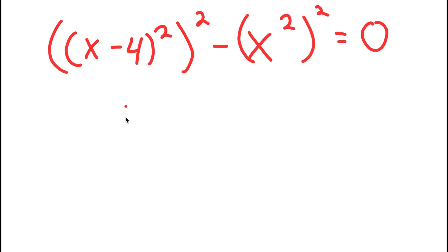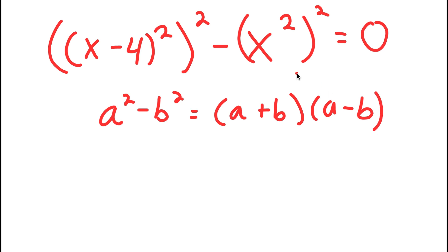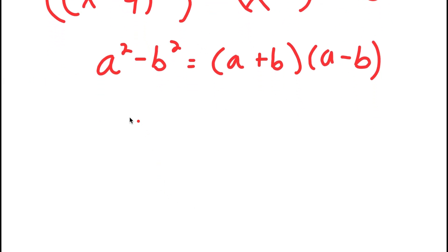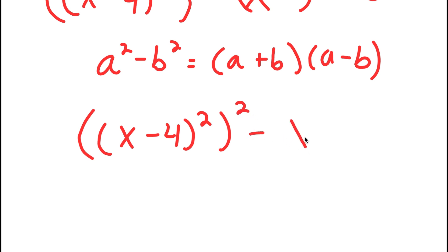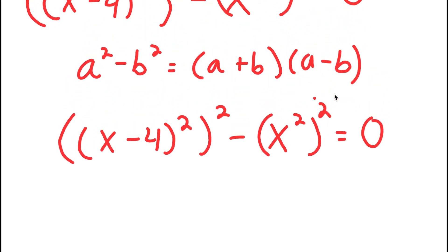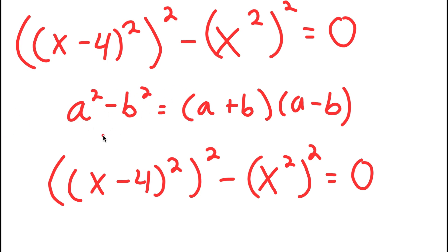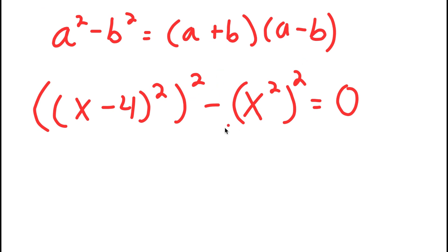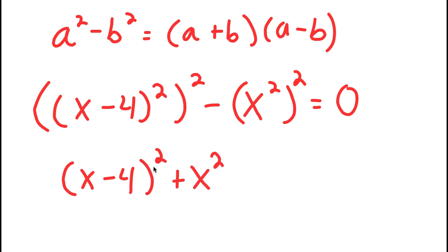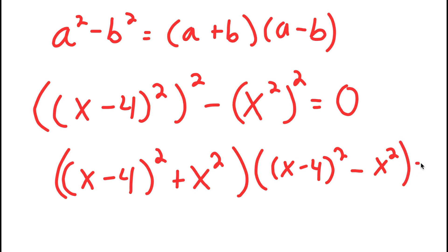From here, I can use the algebraic property that states if I have something in the form a squared minus b squared, this is equal to a plus b times a minus b. So in this case, a is x minus 4 squared and b is x squared. So I get x minus 4 squared plus x squared, times x minus 4 squared minus x squared, is equal to 0.